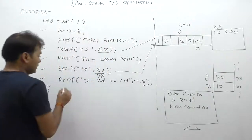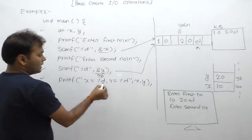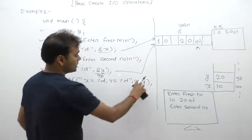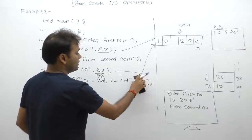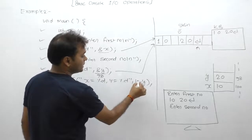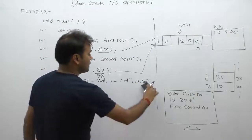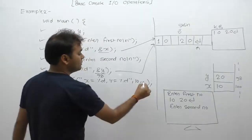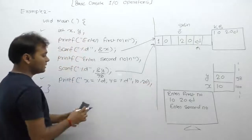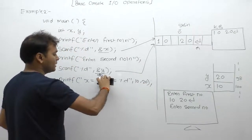In that case directly x equals to percent d, y equals to percent d. X ke place par replace karenge current value of x which is 10. Same as y ke place par replace karein current value of y which is 20. Then first percent d ke place par replace our value of x as his first value as 10.